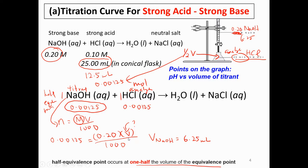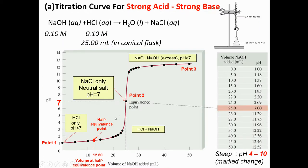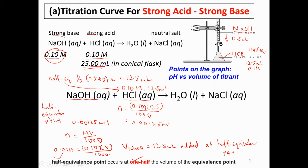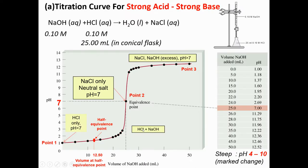Let's look at the graph again. In the example where both concentrations are the same, after we calculate, the half-equivalence point is at 12.5 ml on the volume-of-titrant-added axis, and the equivalence point is at 25 ml. Remember to label both 25 and 12.5 on the titration curve for strong acid and strong base.